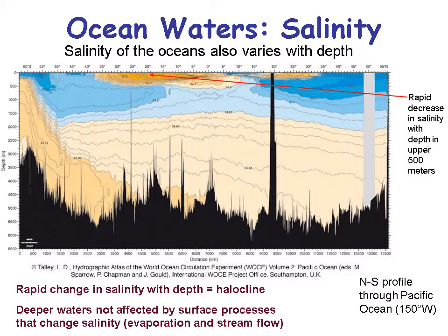Salinity also varies with depth. Looking at a cross-section of the Pacific Ocean with Hawaii visible in the middle, salinity is highest at the surface where evaporation occurs. Deeper waters have stable, relatively unchanged salinity. There's a depth — around 2,000 meters — where salinity levels off and doesn't change, whereas at the surface, salinity varies considerably due to evaporation and fresh water input from streams.